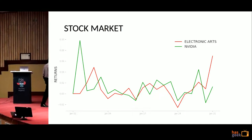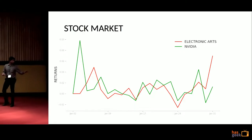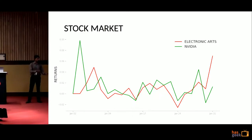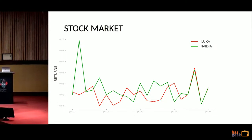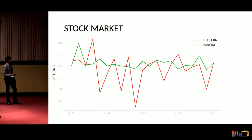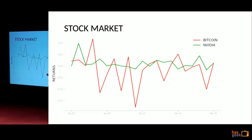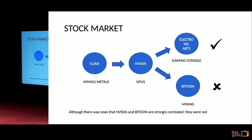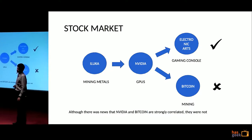If I look at the returns of Electronic Arts and Nvidia, we can see some kind of a relationship — they are going hand in hand. Iluka and Nvidia are almost in the same direction, though not as closely. But with Bitcoin, there is something wrong. Bitcoin is definitely not in the same league as Nvidia — it has a lot of variation. So our hypothesis: Iluka increases → Nvidia increases, correct; Nvidia increases → Electronic Arts increases, correct; but with Bitcoin, incorrect.